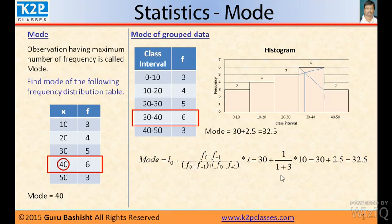Here l0 is 30 plus f0 minus f minus 1, 6 minus 5 is 1, divided by 6 minus 5, f minus 1 is the frequency of the just previous class. So 6 minus 5 is 1. Then f0, f0 is the frequency of the mode class, f plus 1 frequency of just the next class interval. So 6 minus 3 is 3.